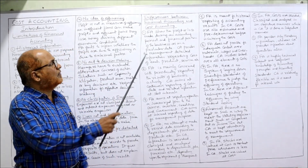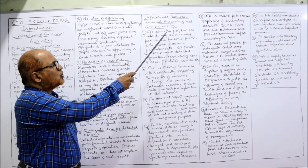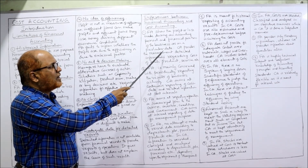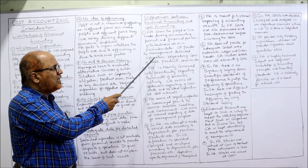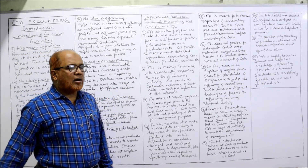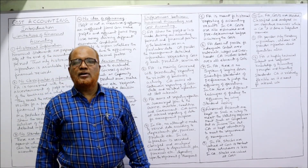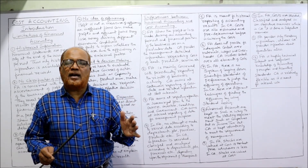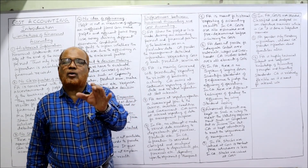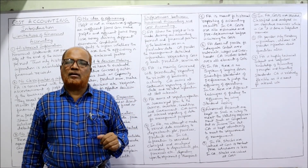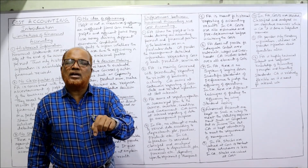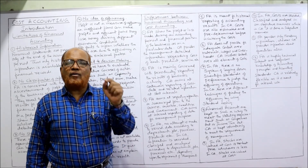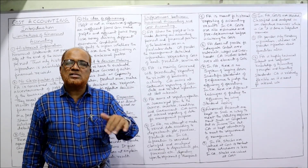The first difference: financial accounting shows the profit or loss made during the accounting period and the financial position of the business, whereas cost accounting provides management with detailed information regarding the cost of each product. Financial accounting is maintained to find out profit or loss at year end, whereas cost accounting is maintained to find out the cost of production of each product or service.